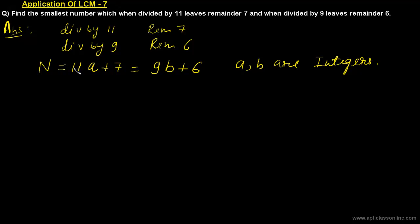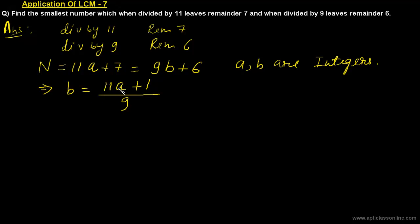Since both expressions equal n, we have 11a + 7 = 9b + 6. Rearranging to get the value of b, we get b = (11a + 7 - 6) / 9 = (11a + 1) / 9. This is the value of b in terms of a. The condition is that both a and b must be integers, so we need (11a + 1) to be divisible by 9.